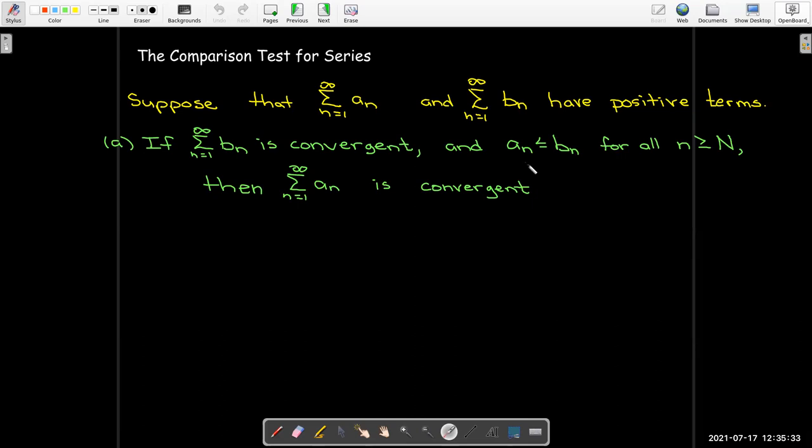Now notice that we only need the terms to be smaller starting from some finite value. So it doesn't have to be starting at one. The terms may not even be defined at one. Or maybe for the first few terms, A sub n is actually bigger than B sub n. But if eventually, and forever afterwards, the A sub n term is smaller than the corresponding B sub n term, and B sub n is convergent, then the A sub n series is also convergent.